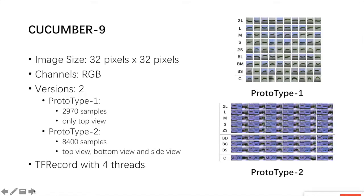The dataset we use is named Cucumber9, which divides cucumbers into nine classes. The layout of this dataset is the same as CIFAR-10. This dataset contains two versions of cucumber images. The first version is Prototype 1, which only has the top view of cucumbers. The second version is Prototype 2, which contains the top view, bottom view, and side view of cucumbers. In our experiment, we use TensorFlow record format to store the dataset and read it with four threads.